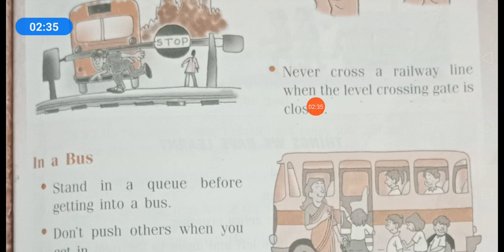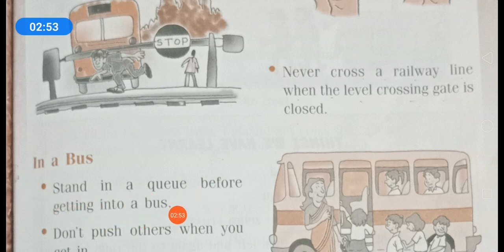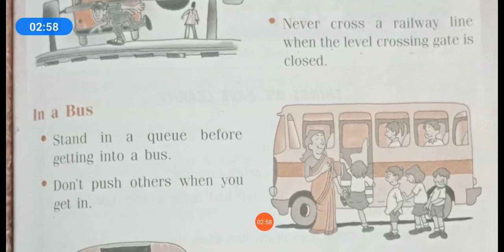Never cross a railway line when the level crossing gate is closed. When the level crossing gate is closed, someone is crossing the railway line — it shouldn't be done. In a bus, stand in a queue before getting in. Don't push others. You have to make a line and then get into the bus.